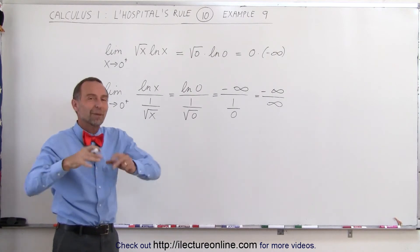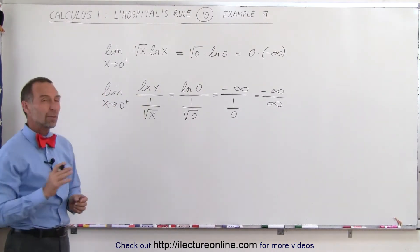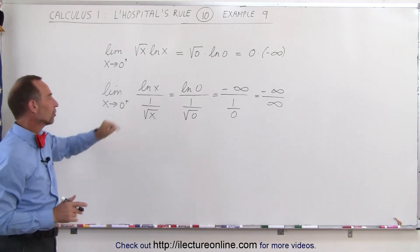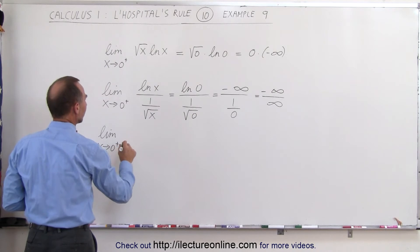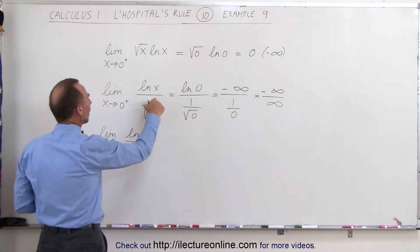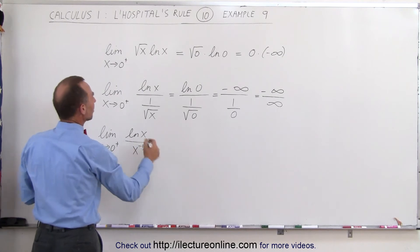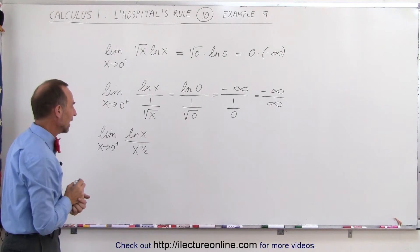It's an indeterminate form, but it makes it a proper form to use L'Hopital's rule on. Let us now apply L'Hopital's rule on this. But to do that, I'm going to rewrite the denominator just slightly. Let's take this as the limit as x approaches 0 from above of the natural log of x divided by x to the minus 1 half when we bring it to the numerator in the denominator.